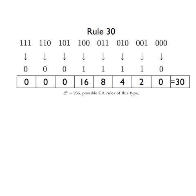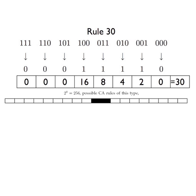If you think about how many possible rules there are of this type — well, each entry like 1, 1, 1 could either go to 0 or to 1, so there are two choices for each. That's 2 times 2 times 2 times 2 — 2 to the power of 8. There are 256 rules you can make of this type. People have made them up and played with them, but this one happens to give nice patterns.